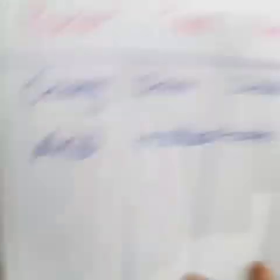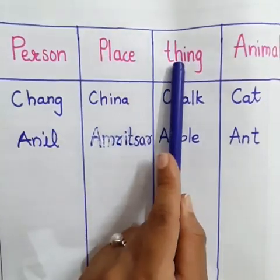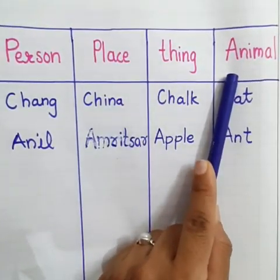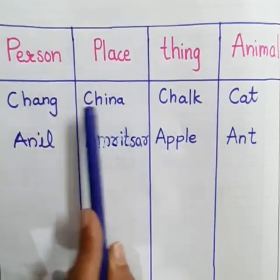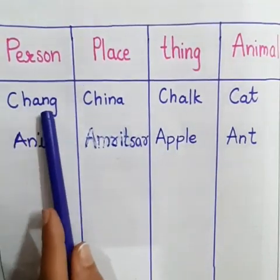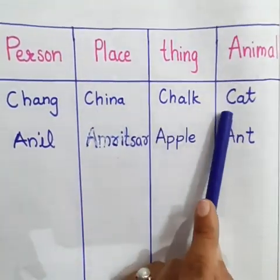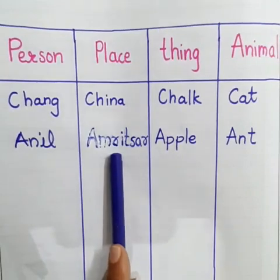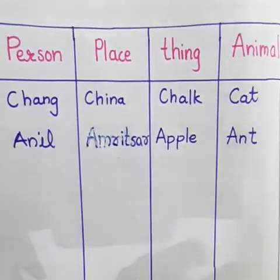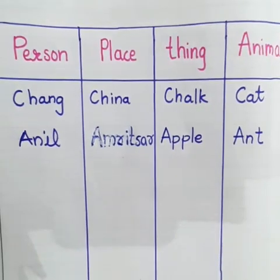Now look at this. I have created four columns — person, place, thing, and animal — and I have written names starting with the letter C in each column. Person: Chang; Place: China; Thing: Chalk; Animal: Cat. I have taken another alphabet, A — Anil, Amritsar, Apple, Ant. Now let us take another alphabet and try to write names with the same alphabet.